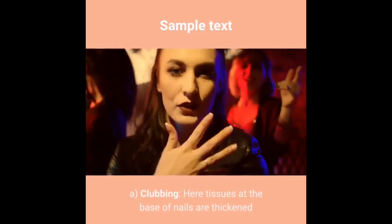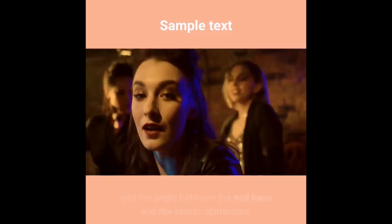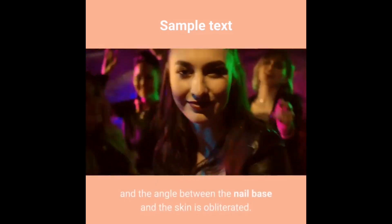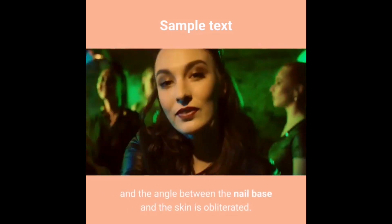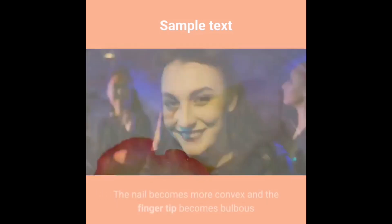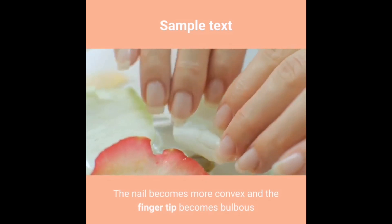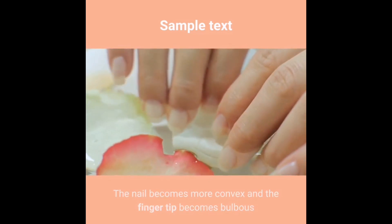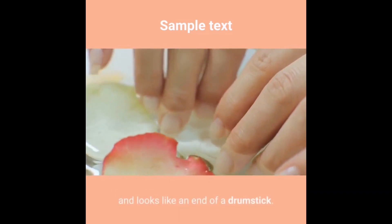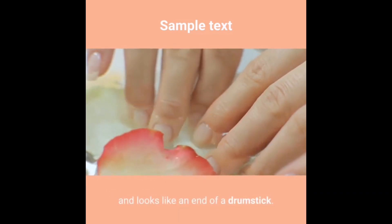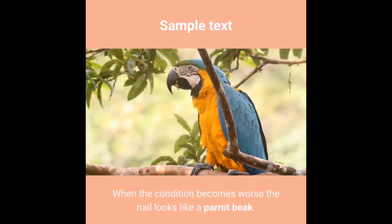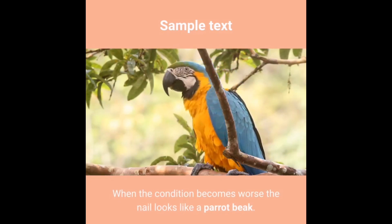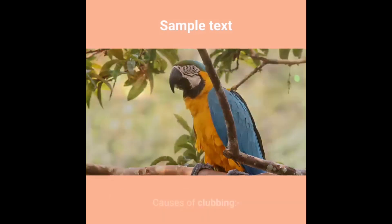Clubbing: Tissues at the base of the nails are thickened and the angle between the nail base and the skin is obliterated. The nail becomes more convex and the fingertip becomes bulbous, looking like the end of a drumstick. When the condition worsens, the nail looks like a parrot beak.